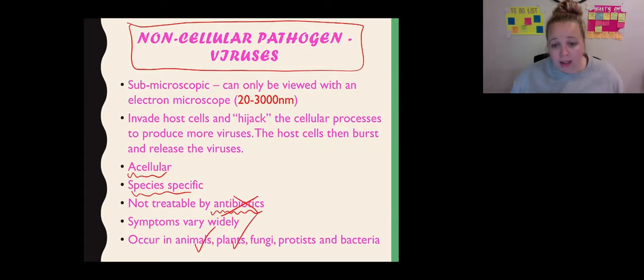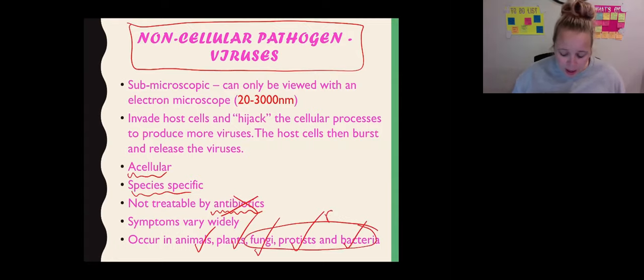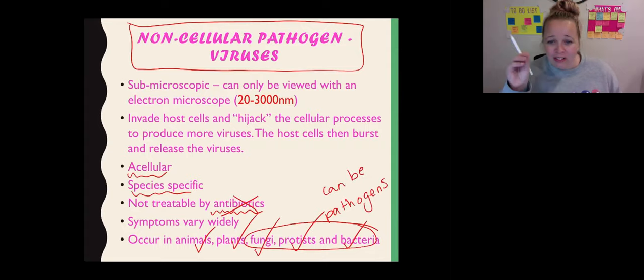This is why we can't just take antibiotics and get rid of a virus. The symptoms vary very widely and they occur in all of the kingdoms. So animals can get viruses, plants can get viruses, fungi can get viruses, protists and bacteria. These three here are pathogens in their own right or can be pathogens, and you can have a virus that infects the bacterium.